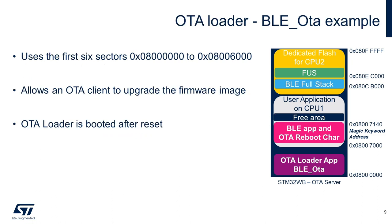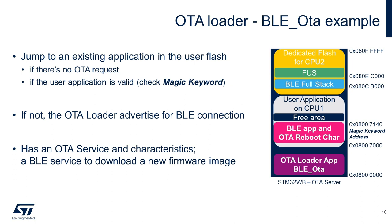The OTA loader allows an OTA client to upgrade the firmware image. Compared to previous Bluetooth examples, CPU1 boots to the OTA loader after a reset. The OTA loader will jump to the user application if there's no OTA request and the user application is valid. The OTA loader checks the magic number to determine this. If not, the OTA loader starts advertising to nearby OTA client devices for a Bluetooth connection. The OTA loader has the OTA service and characteristics, and this BLE service is used to download the new firmware image.